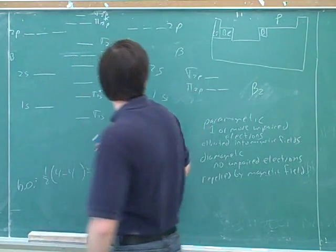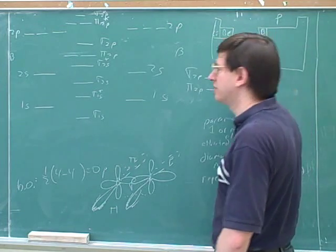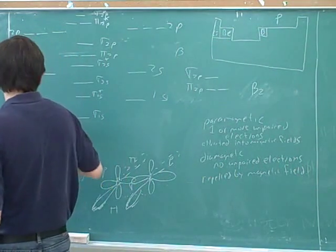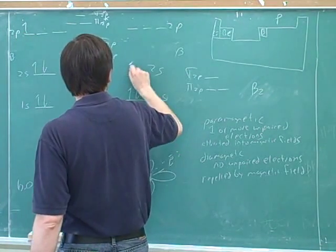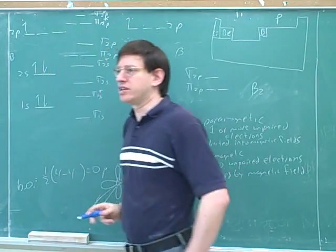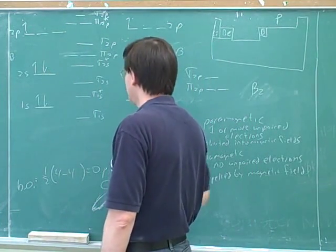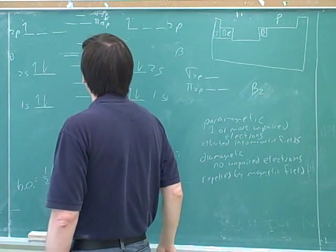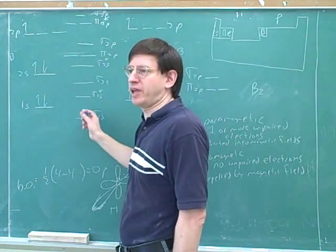Five. One, two, three, four, five. Good. Again, we're counting all the electrons, not just the valence. One, two, three, four, five. One, two, three, four. So here's how we would draw the original picture.